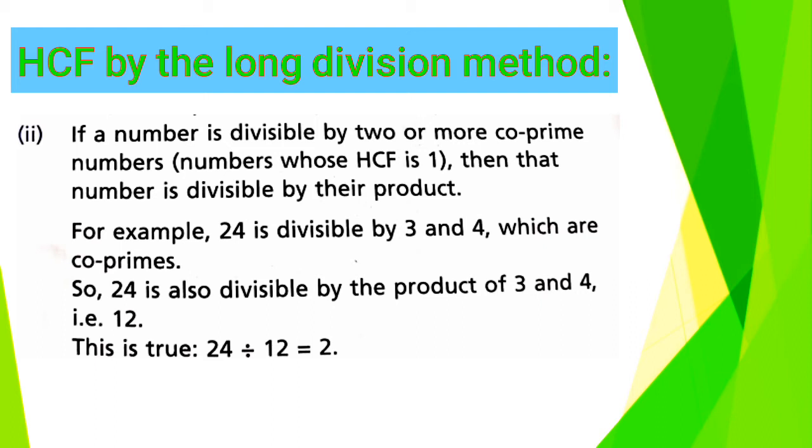So, 24 is also divisible by the product of 3 and 4. And you know that the product of 3 and 4 is 12. This is true: 24 ÷ 12 = 2. In short, by the product of co-prime numbers, the given number can be divided. Like, 24 is the given number, and 3 and 4 are co-primes.